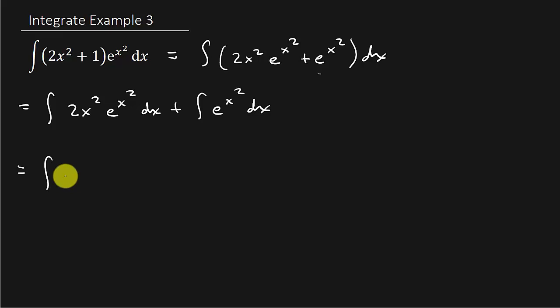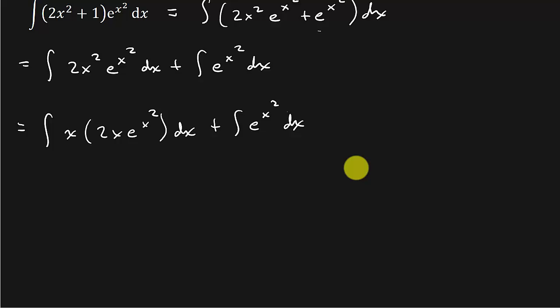So I'm going to write this as x times 2x e to the x squared dx, and then plus e to the x squared dx. So what did I do here? Well, I wrote x squared as x times x. And why did I do that? Well, I can now use integration by parts. Because see, I can integrate this term now. You see that? I can integrate this. And then, so I'll let this part be dv and this part be u.